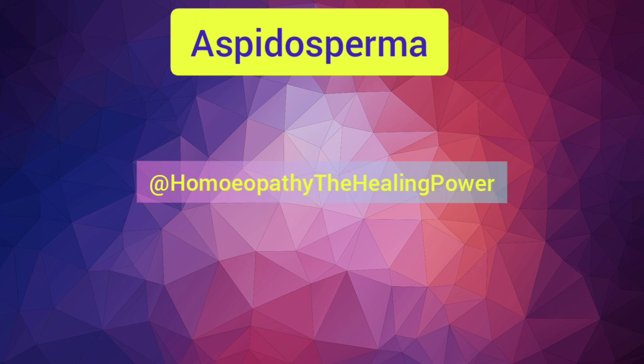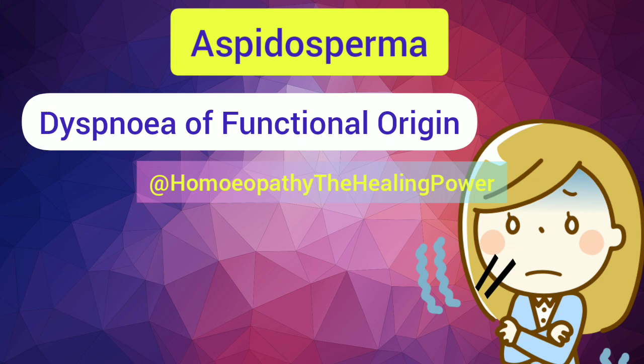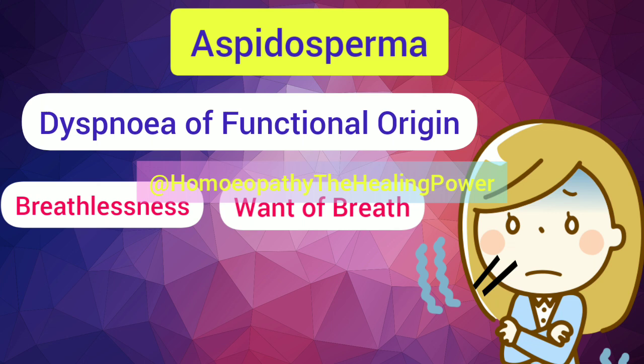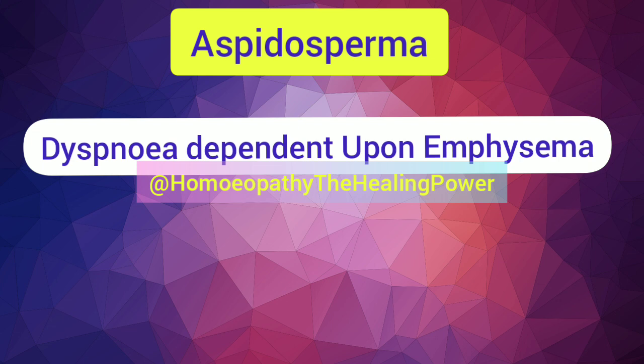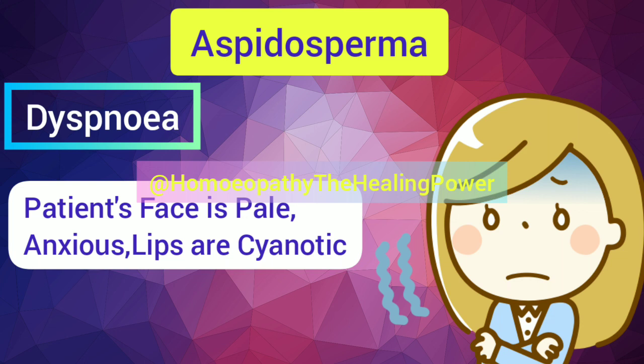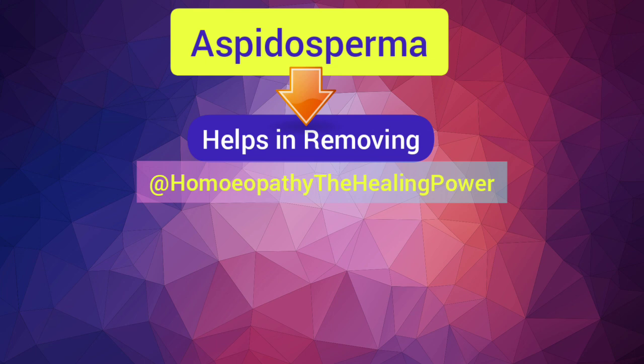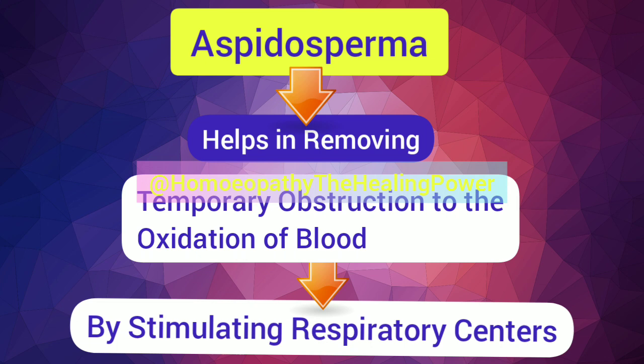Aspidosperma is indicated in cases of dyspnea — dyspnea of functional origin — where there is breathlessness and want of breath, especially during exertion. This is the guiding symptom of Aspidosperma. It is also indicated in dyspnea dependent upon emphysema, where the patient's face is pale, anxious, and livid, with cyanotic lips, and the pulse is small and irregular.